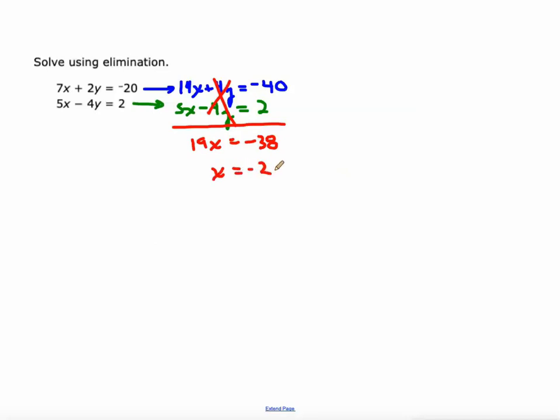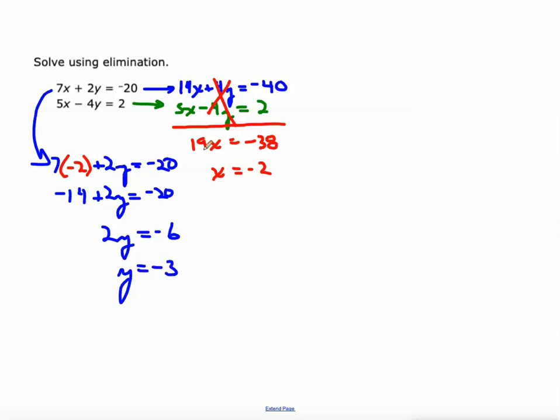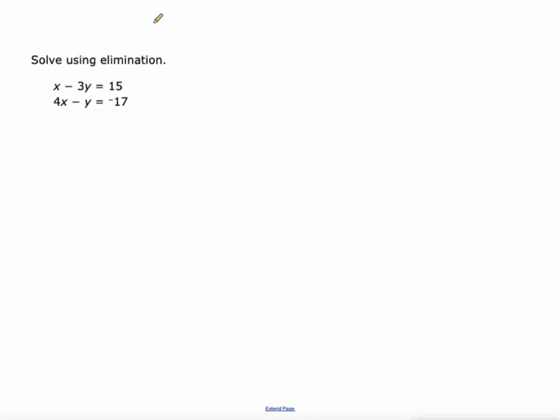Now we can use that negative 2 to figure out what y is. You can plug that into either equation. I'll plug it into this top one here, so 7 times negative 2 plus 2y equals negative 20. 7 times negative 2 is negative 14, then add 14 to both sides, 2y equals negative 6, divide both sides by 2 and y is negative 3. So my solution here is the point negative 2 negative 3. That is the only point that works from both equations. If you graph these two equations, this is the point where they would cross.